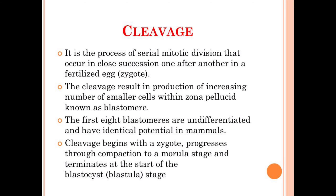The process of cleavage leads to the increment in the number of smaller cells within the zona pellucida, and these cells are known as blastomeres. Simply, zona pellucida is a thick transparent membrane surrounding the ovum before implantation. Within this layer, the division of the zygote occurs, leading to the increment in number of cells, and these cells are known as blastomeres — the product of cleavage.